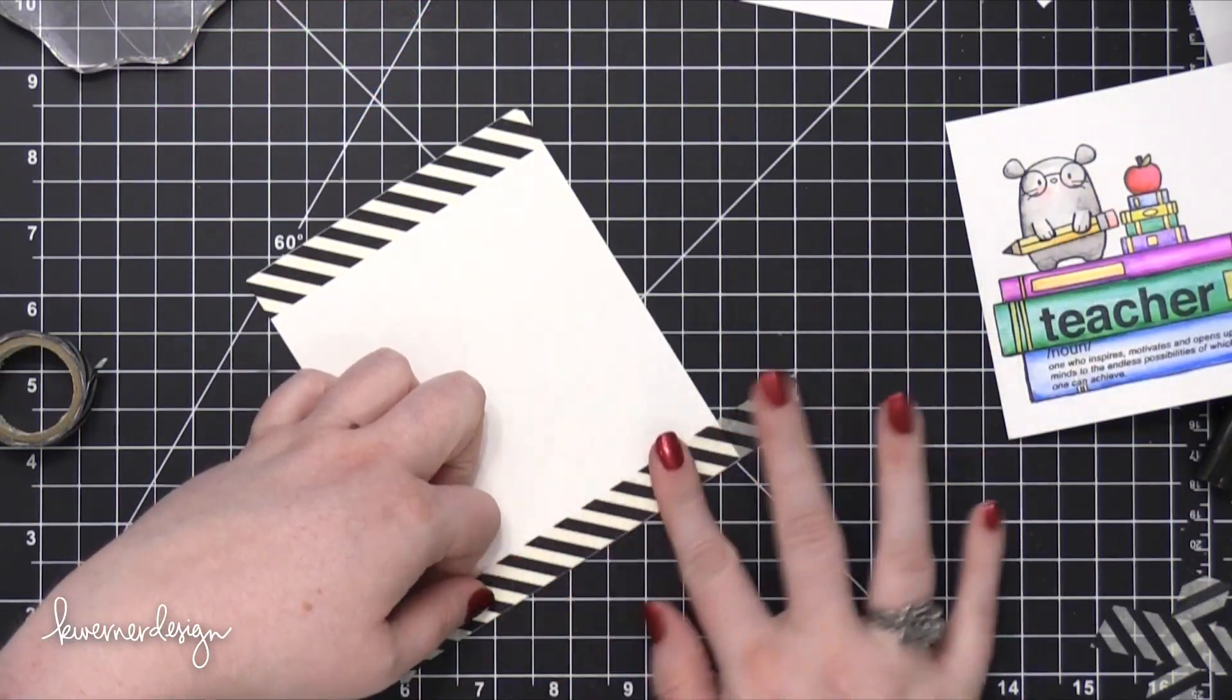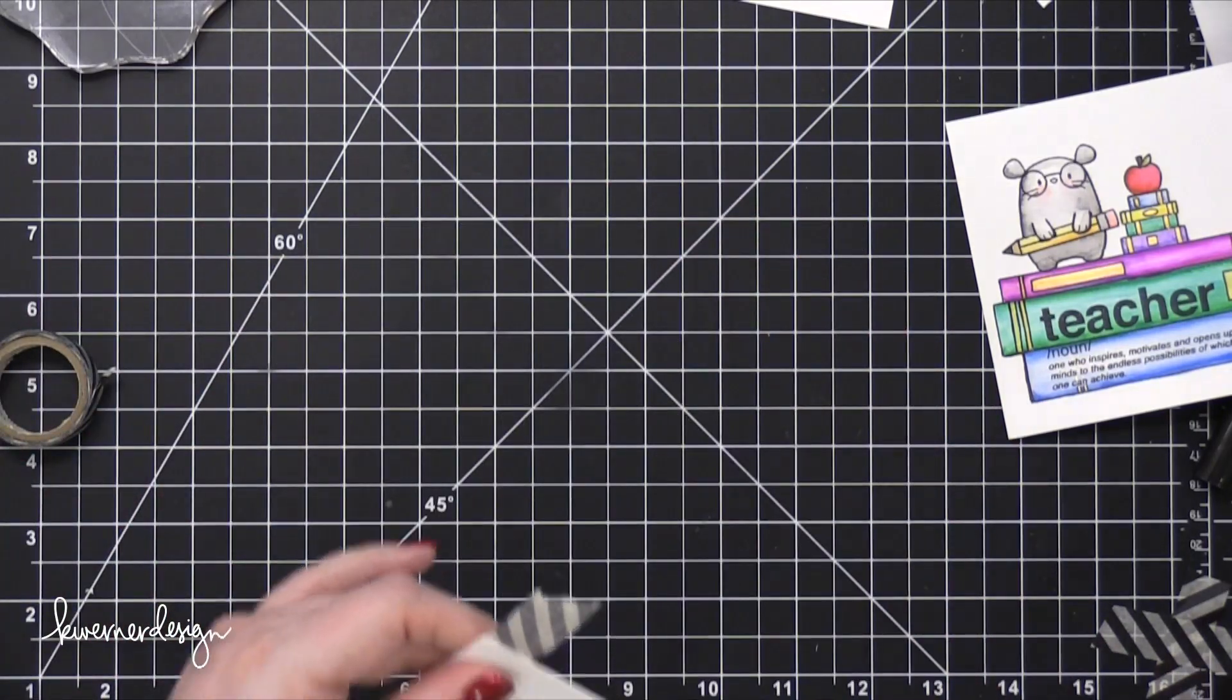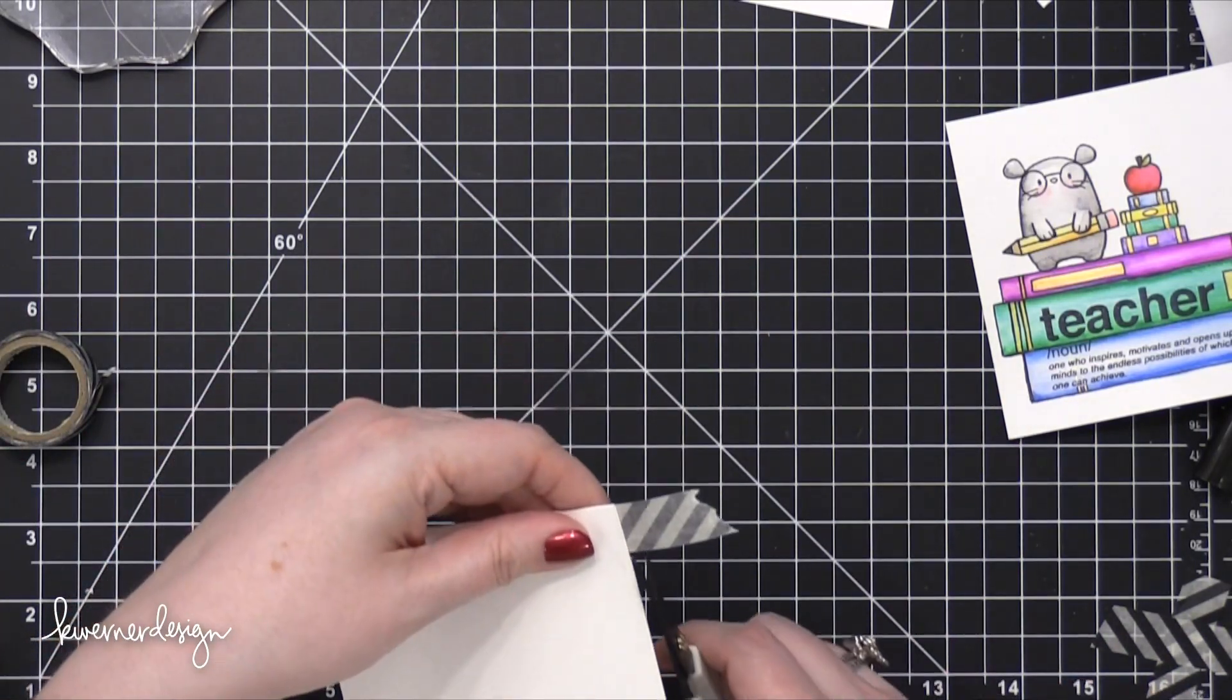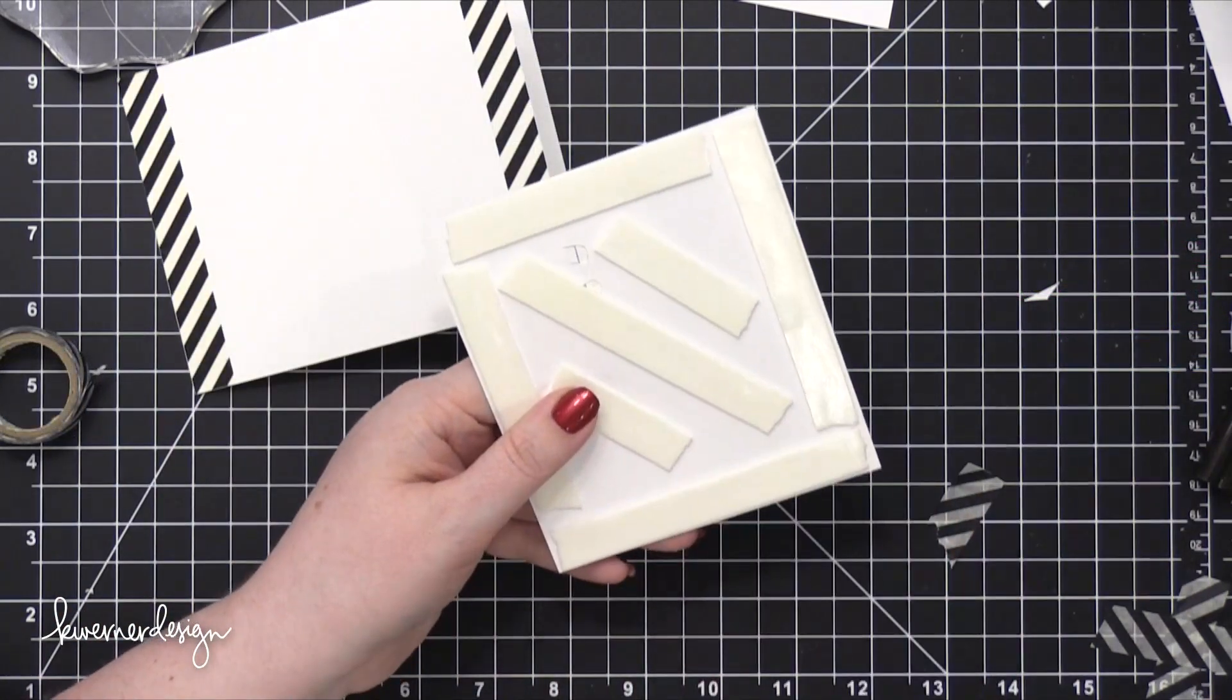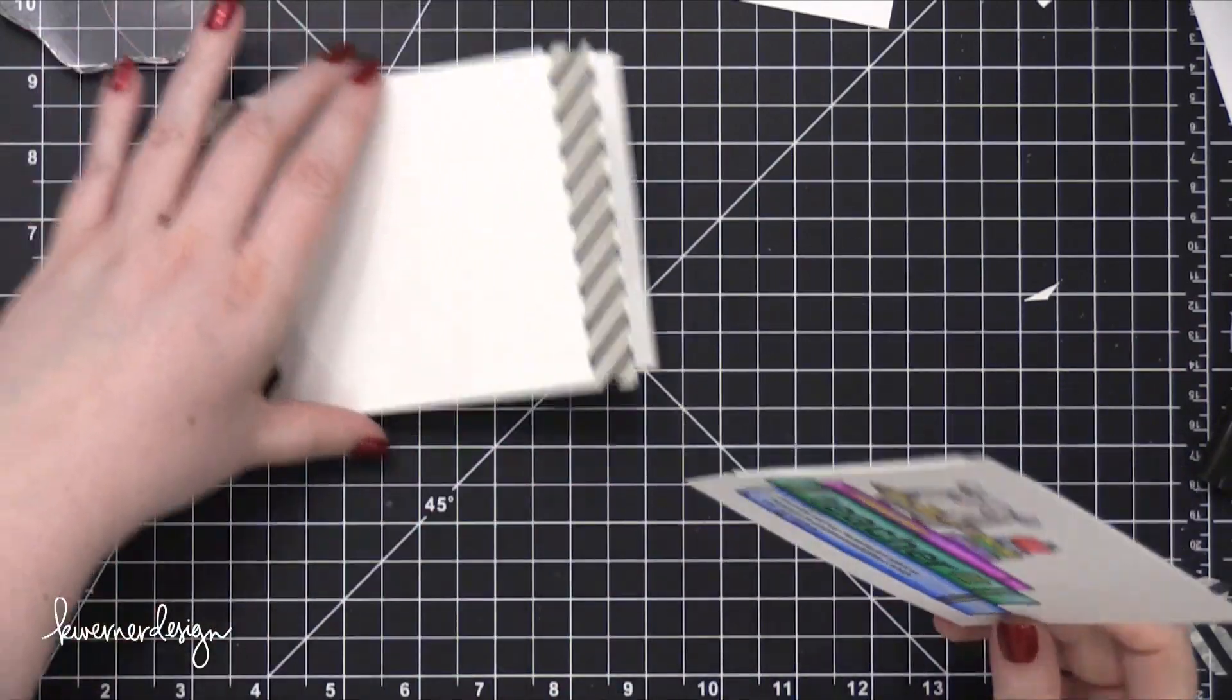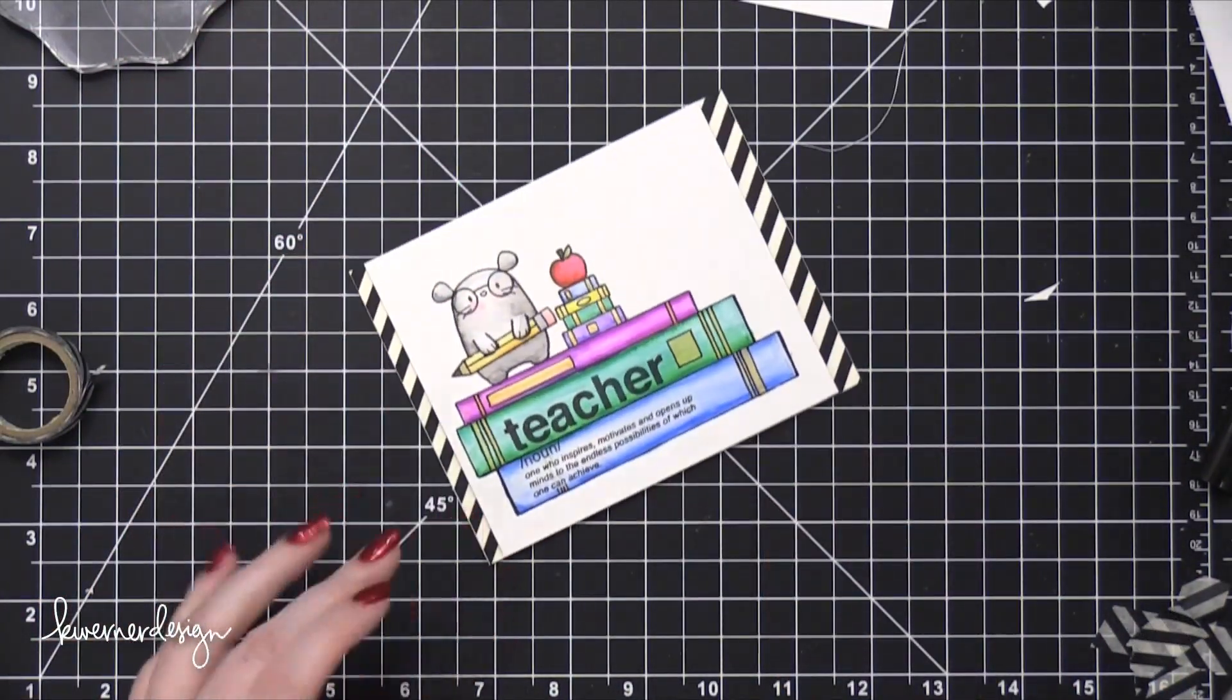So I'm adding some washi tape to both ends of the card here, and then I'll use my scissors to cut off the excess. And I think this might be my very first roll of washi tape that I've used all of. I have so much washi tape, and I only use a little bit at a time, so this must be a washi tape design that I absolutely love.